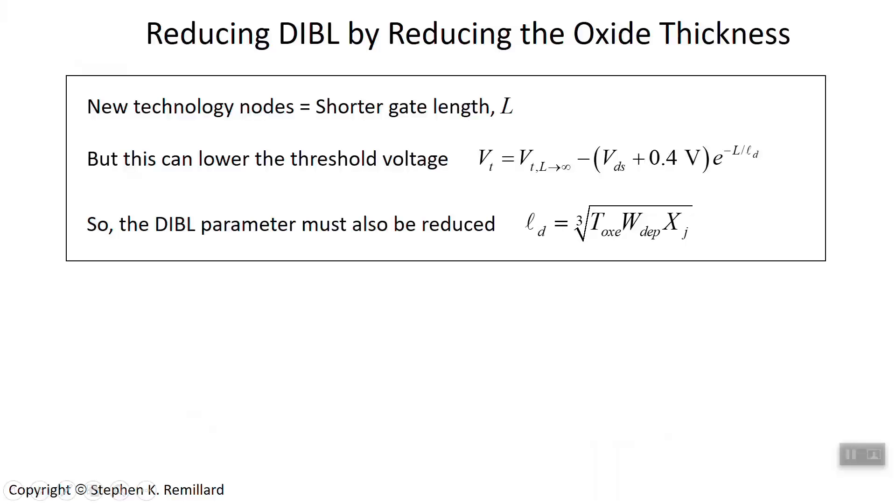This is the first of three mini lectures on how to reduce DIBL by tackling these three vertical lengths: the oxide thickness, the depletion layer depth, and the junction depth.